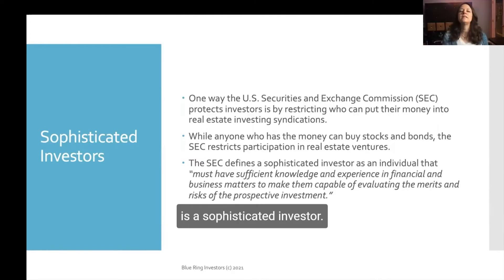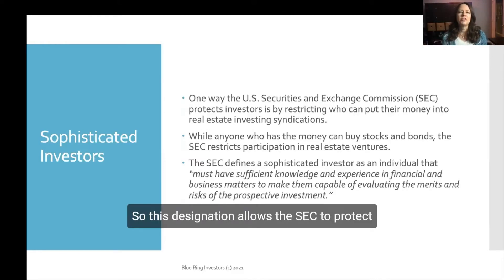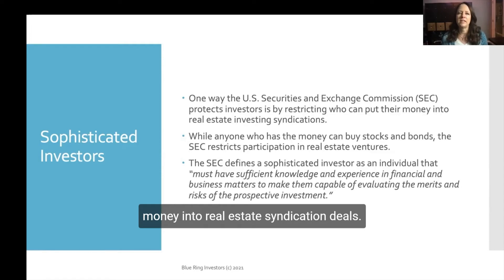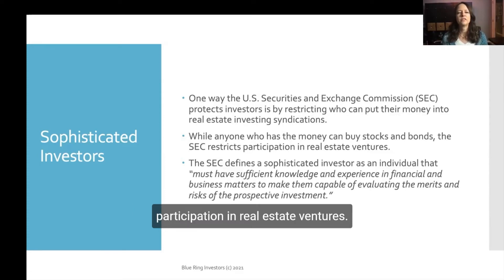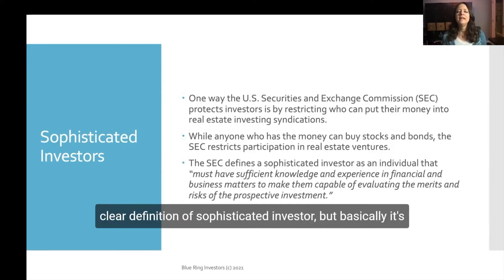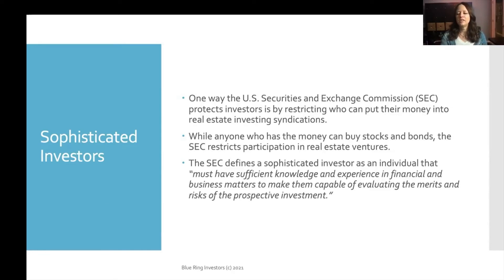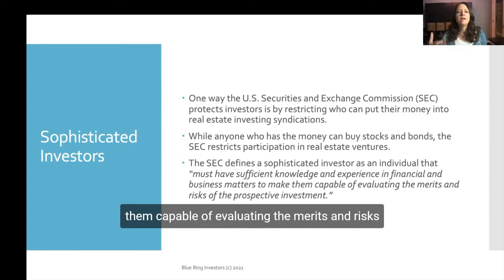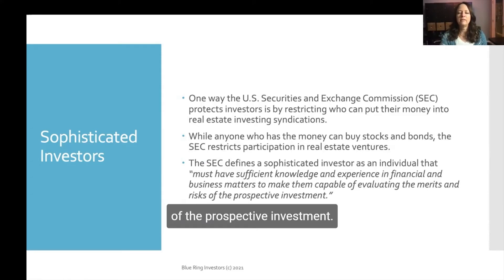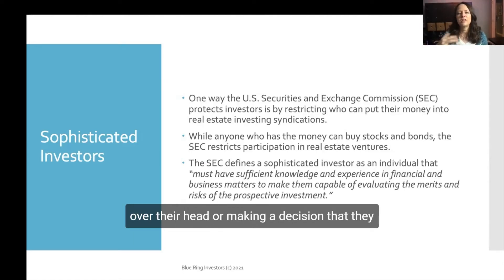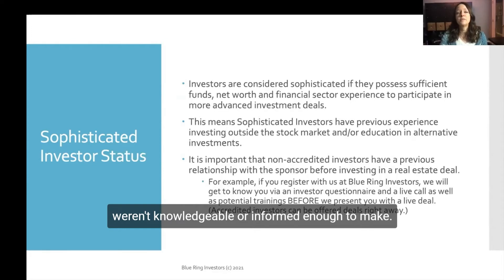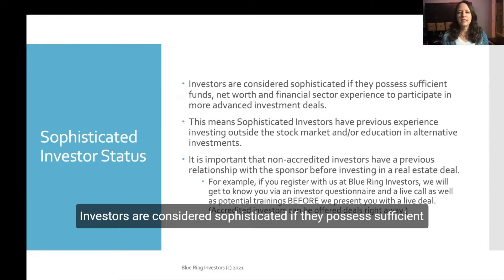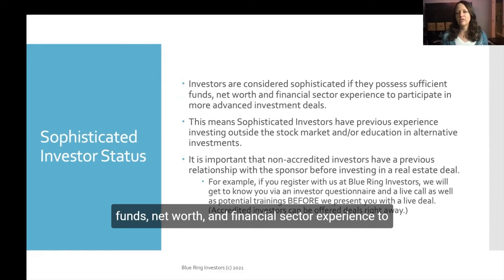The second type of investor is a sophisticated investor. This designation allows the SEC to protect people who are putting their money into real estate syndication deals. While anyone with money can buy stocks or bonds, the SEC actually restricts participation in real estate ventures. The SEC's definition of sophisticated investor is that the individual must have sufficient knowledge and experience in financial and business matters to be capable of evaluating the merits and risks of the prospective investment — to keep them from getting in over their head or making uninformed decisions.